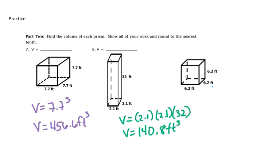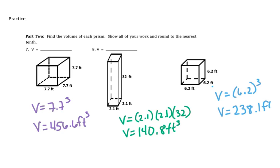Our next example has all three sides the same, so it's a cube. We can take and do our volume as 6.2 cubed. When we do that, we'll get a volume of 238.1 feet cubed.